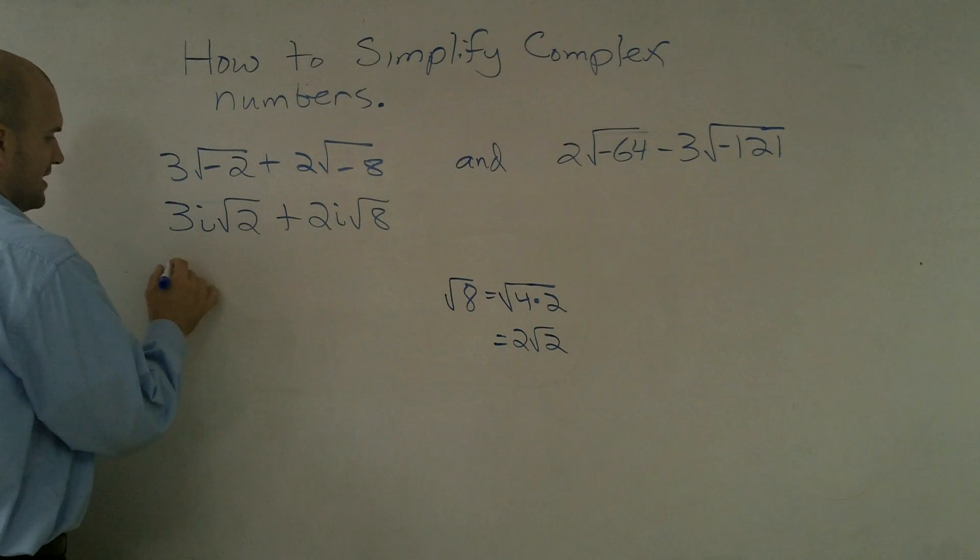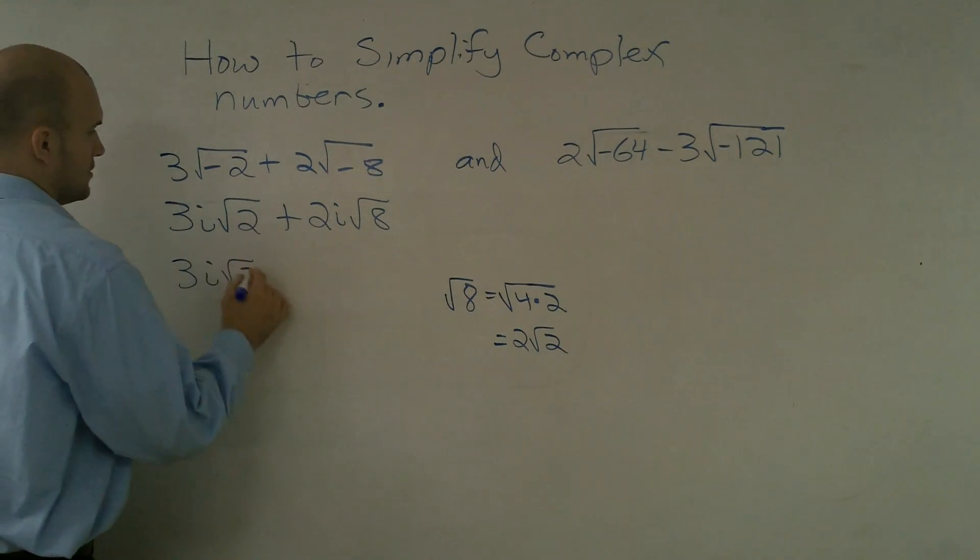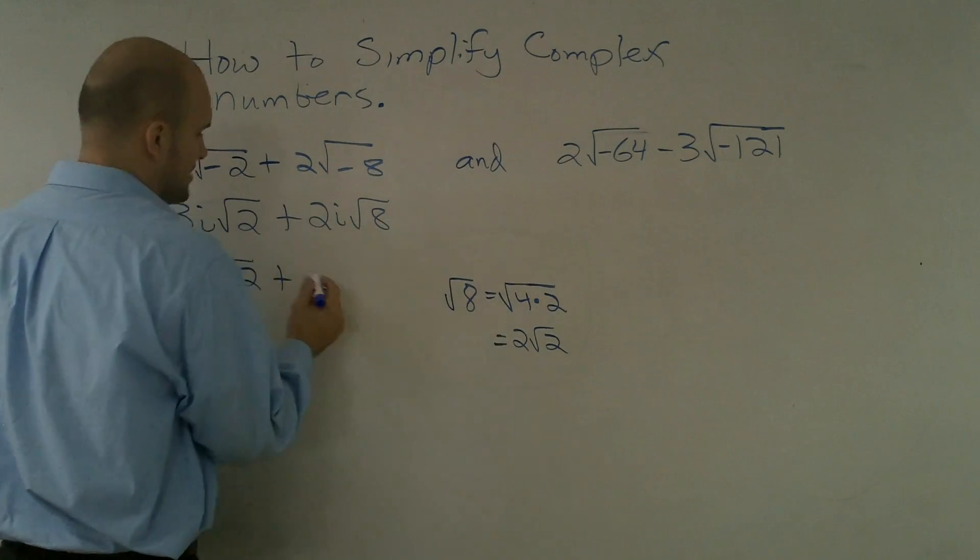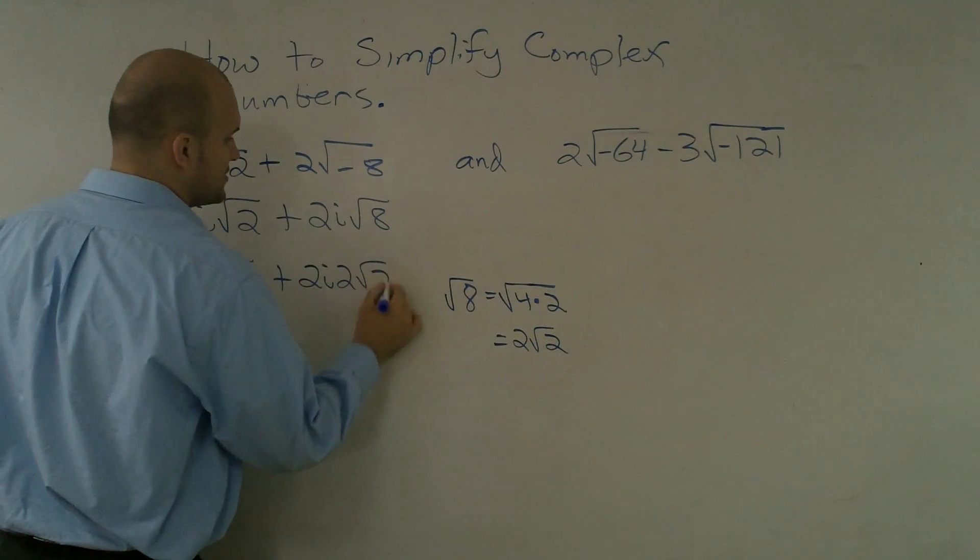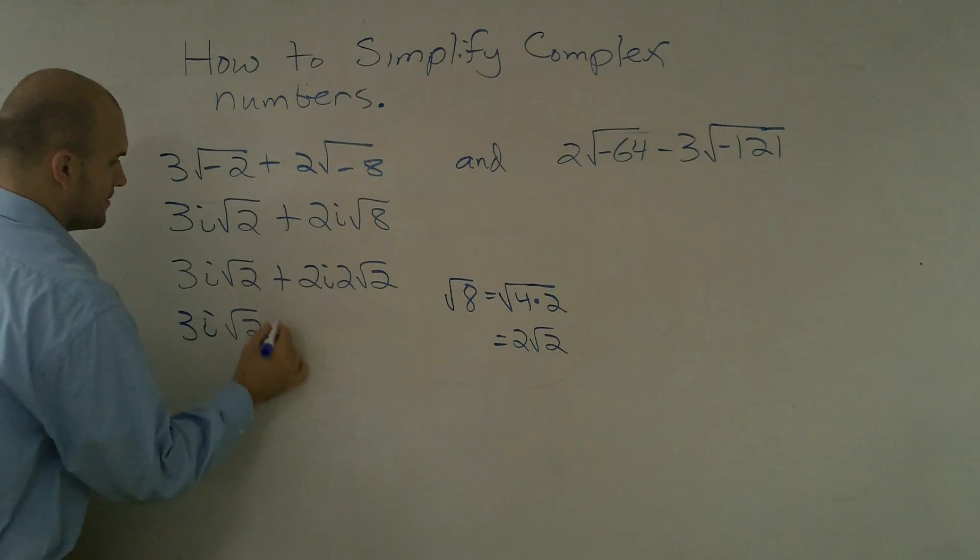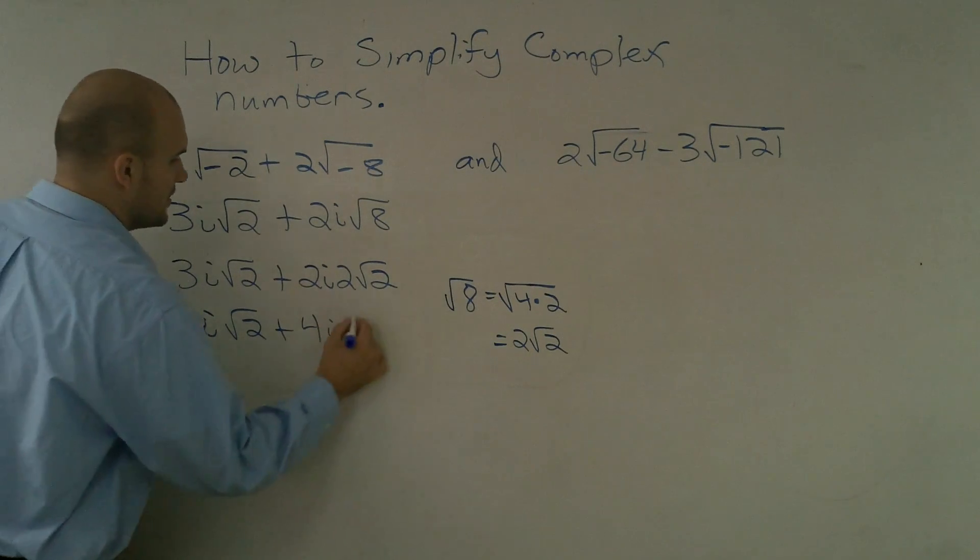So now I have 3i square root of 2 plus... Now if I'm going to change this to 2 square root of 2... Actually, let me write it out. 2i times 2 square root of 2. I now can multiply these number of the 2's.